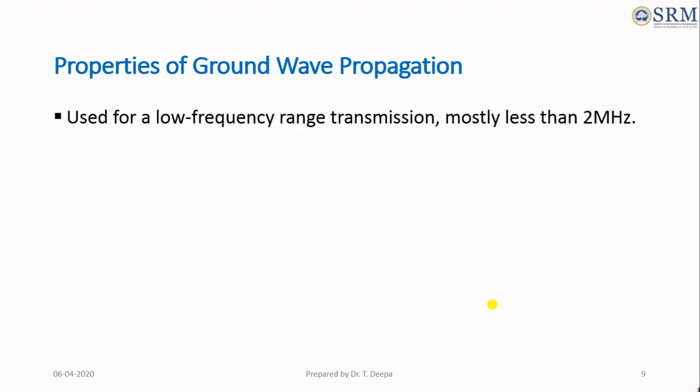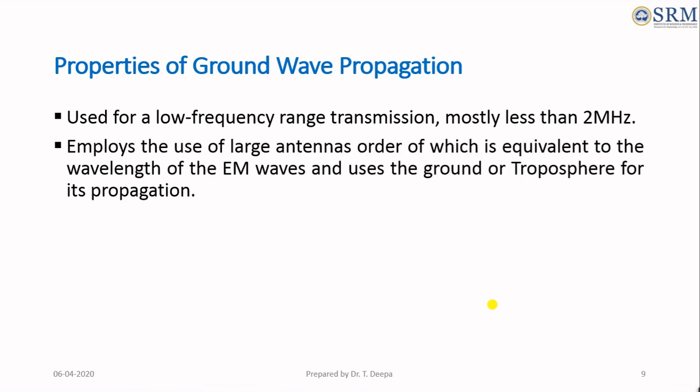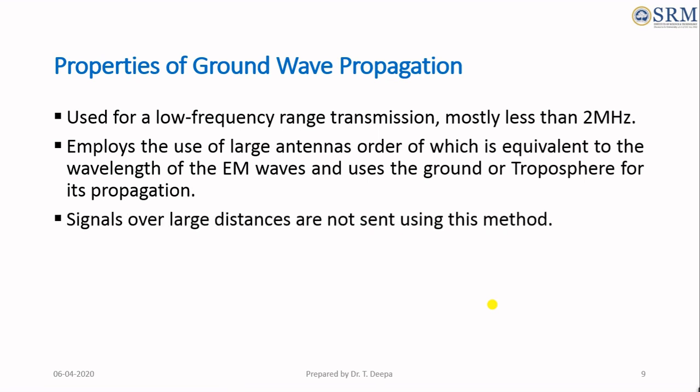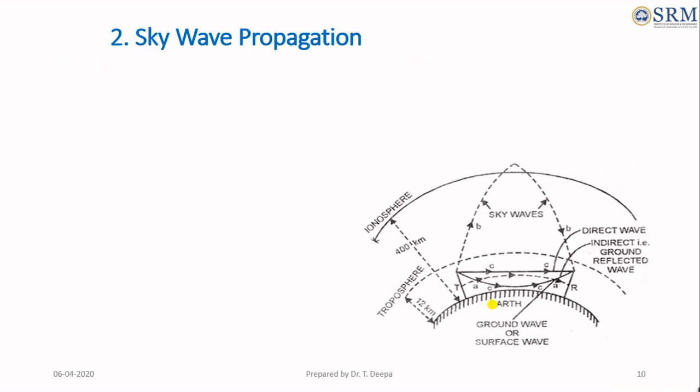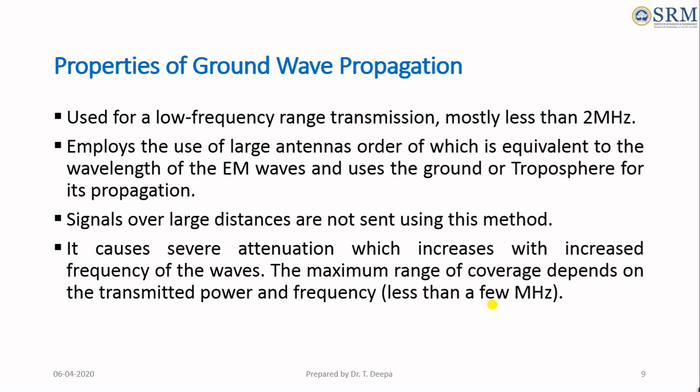Some properties of ground wave propagation: This type of propagation is used for low frequency range transmission, mostly less than 2 MHz. It makes use of large antennas of order equivalent to the wavelength of the electromagnetic waves, and uses the ground for its propagation. Signals over large distances are not sent using this method, and it causes severe attenuation which increases with increased frequency. The maximum range of coverage depends on the transmitted power and frequency.